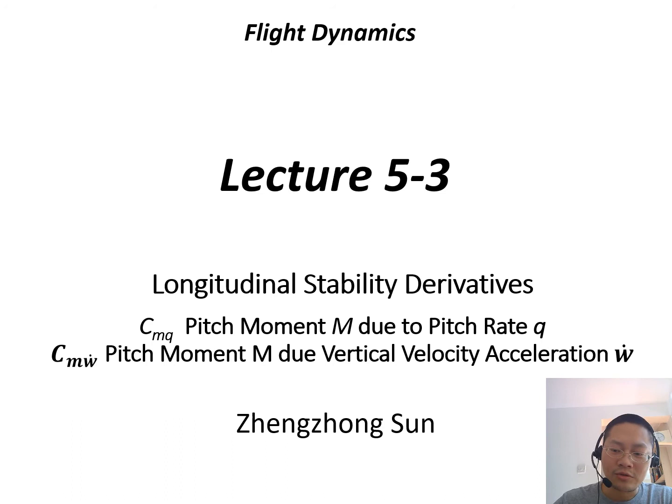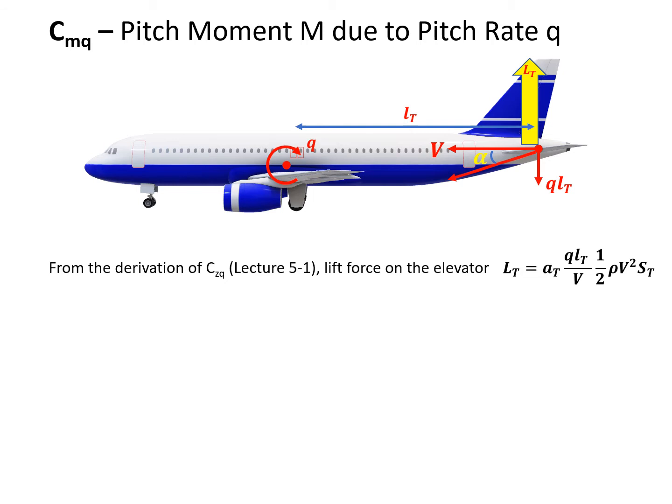The last two derivatives are Cmq, pitch moment change due to the pitch rate q, and Cm w dot, the pitch moment due to vertical velocity acceleration. Now let's see how we can derive Cmq, the pitch moment change due to the pitch rate q.